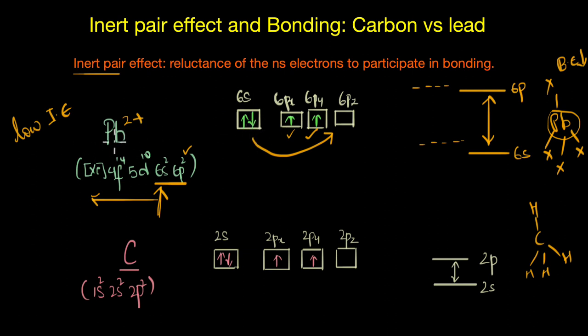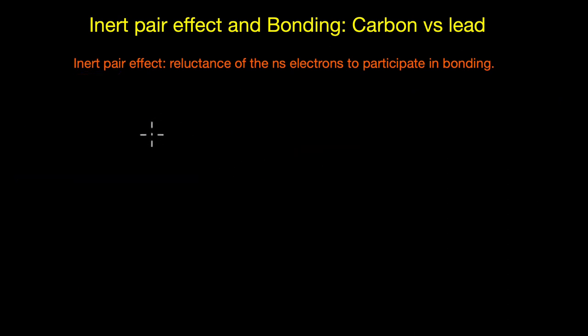Now remember folks, this does not mean that lead forms only ionic compounds. No, here we are simply talking about the role of inert pair effect in understanding why lead prefers to form ionic bonds over covalent bonds. For example, PbCl4 is a covalent compound whereas PbCl2 is considered to be predominantly ionic in nature.